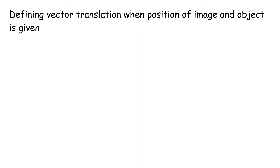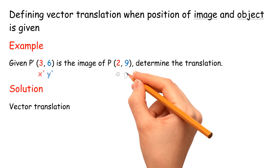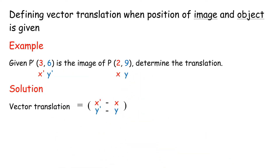Defining vector translation when the position of image and object is given. Example: Given (3, 6) is the image of P(2, 9), determine the translation. Solution: Vector translation = (image x - object x, image y - object y) = (3 - 2, 6 - 9) = (1, -3).